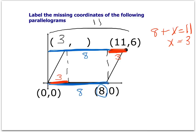The vertical piece in parallelograms is always a little bit easier. We know this vertical distance is 6, so this vertical distance is also 6, which gives us that missing piece right there. A good check: the y-values should be the same — 6 and 6 on top, 0 and 0 on the bottom — and then 3 plus 8 equals 11 for the upper-right vertex.